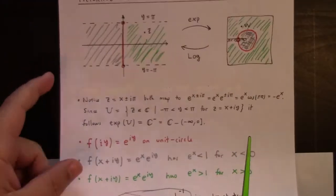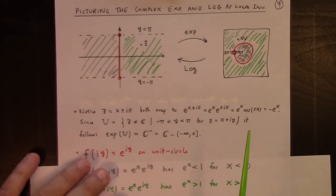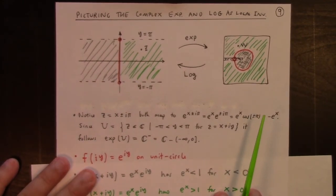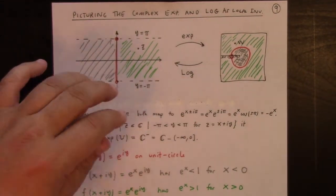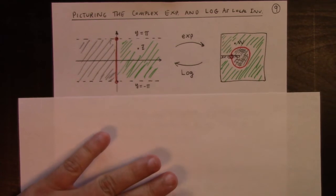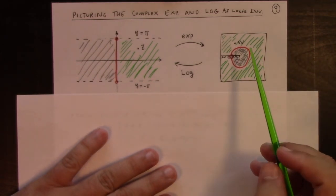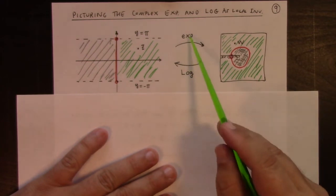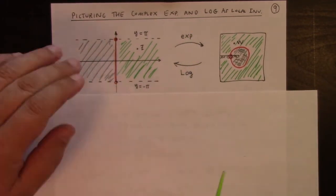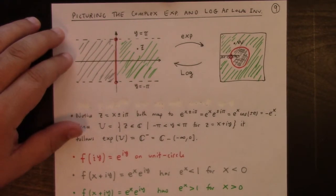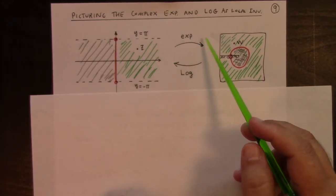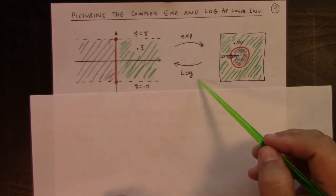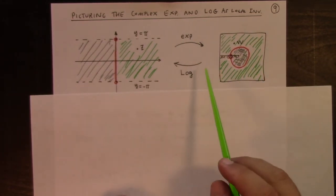Here's the standard one. We can picture the complex exponential and the principal logarithm as a local inverse. And here's how it's going. I've added some other aspects to this picture to try to communicate some things, some different features. This is almost true. I mean, to be more precise, I should really say, well, I'll come back to that.